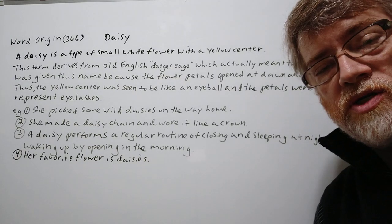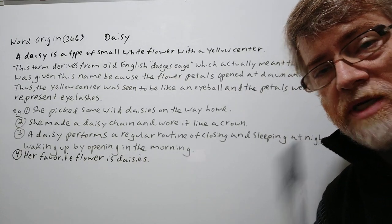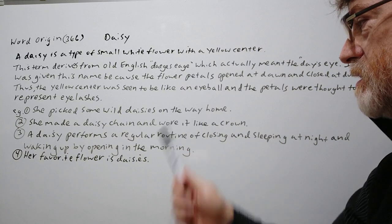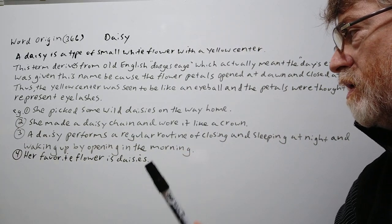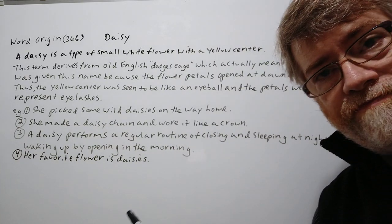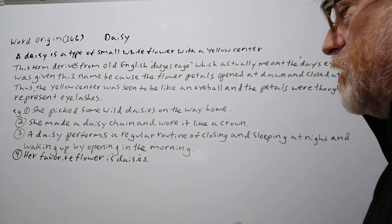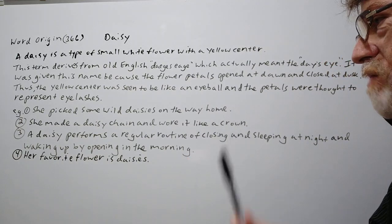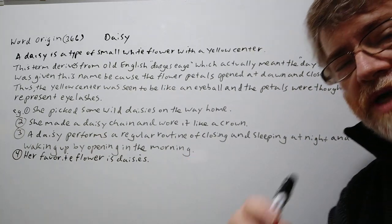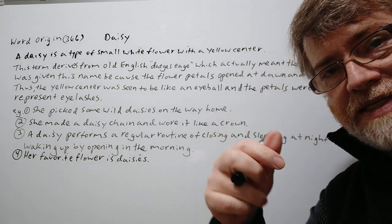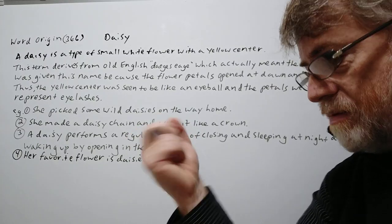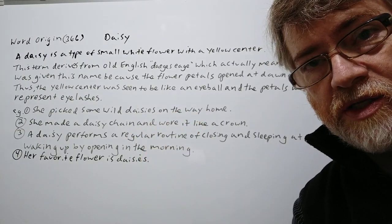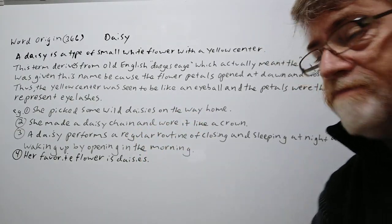We've got four examples here to show just how it's used. Number one: she picked some wild daisies on the way home. Number two: she made a daisy chain and wore it like a crown. If you connect a lot of daisies together you can wear it like a crown, or maybe you can make a bracelet out of it as well — you can make a smaller chain.